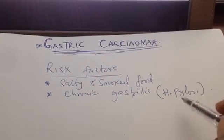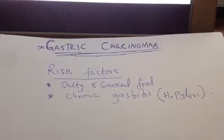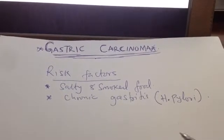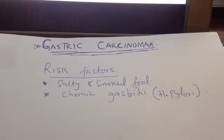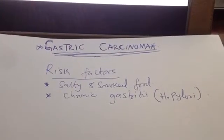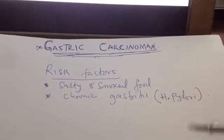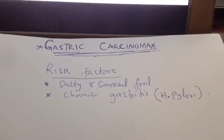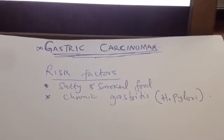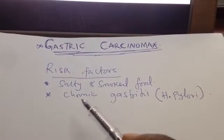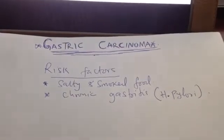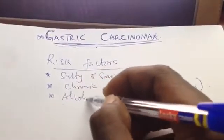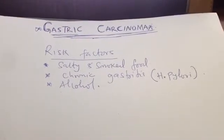Helicobacter pylori is the bacteria that causes gastric ulcer and gastric cancer. In some cases it causes chronic gastritis first, because gastritis has to occur before ulceration develops — it is due to the inflammation that the ulceration then develops. If the gastritis persists for a long time, that chronic state increases the chance of developing gastric carcinoma. Excess alcohol also puts a patient at risk of developing gastric carcinoma.